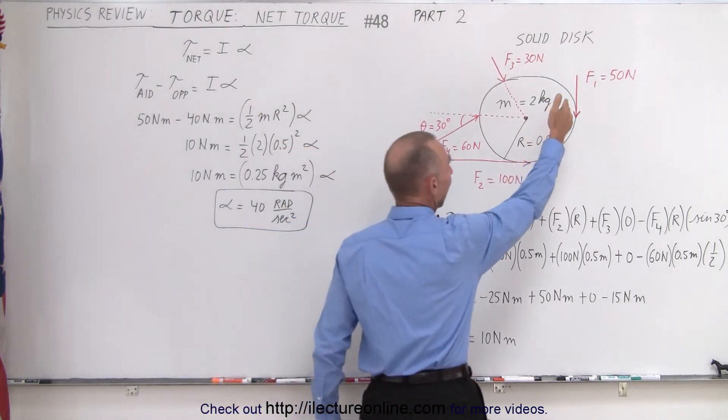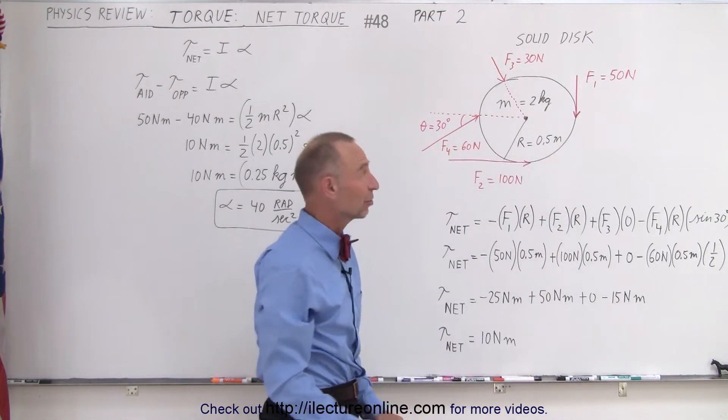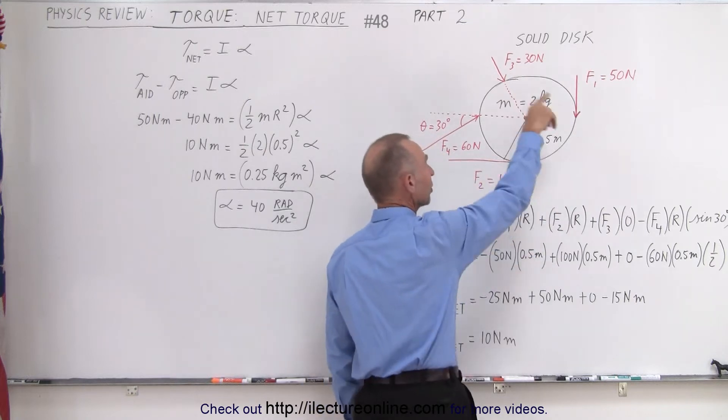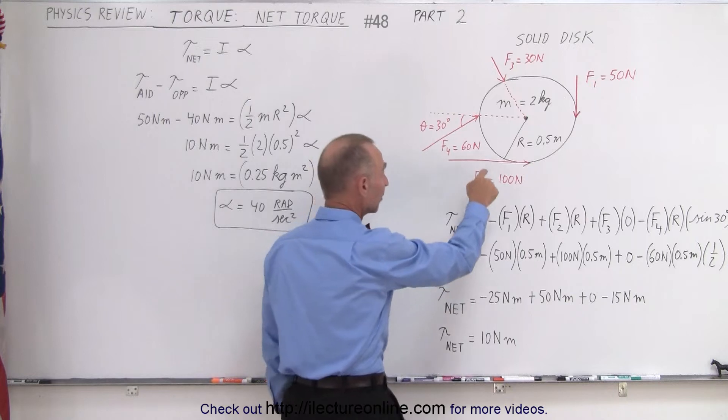Force 1 acts in this direction, which would cause the disc to rotate in a clockwise direction, so this will give you a negative torque. This force right here will cause the disc to rotate in a clockwise direction; that gives you a positive torque.